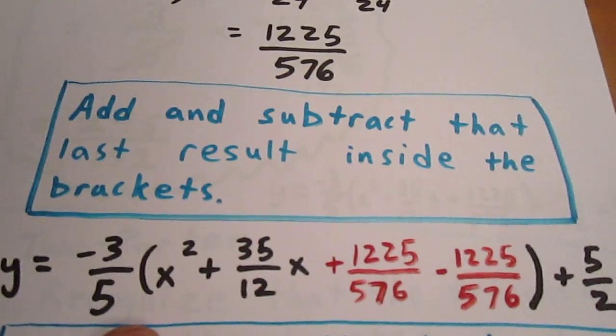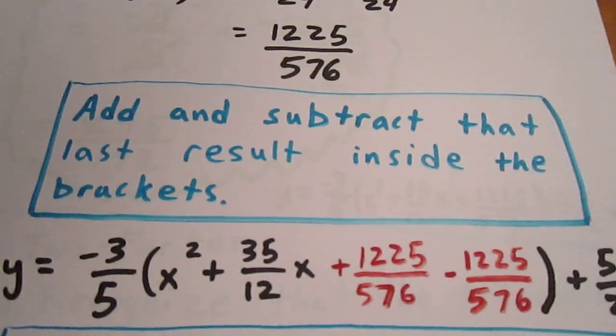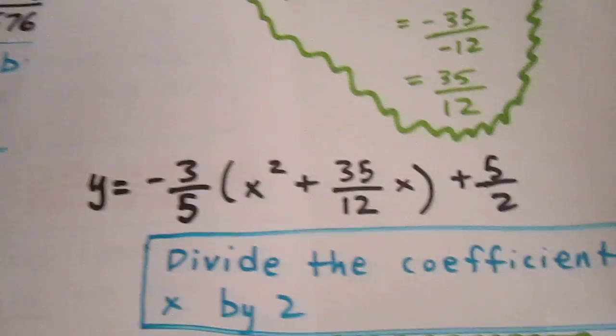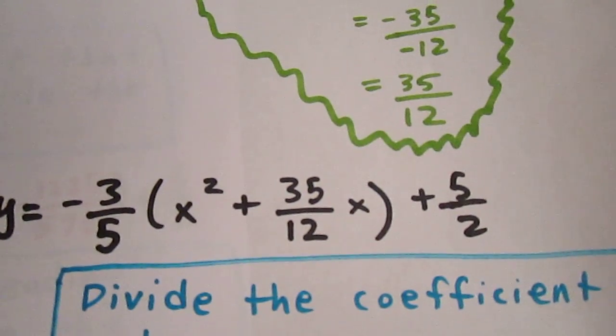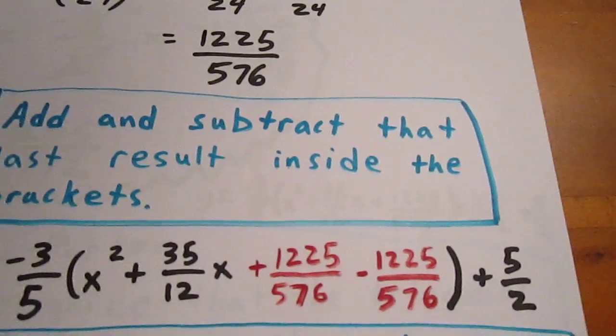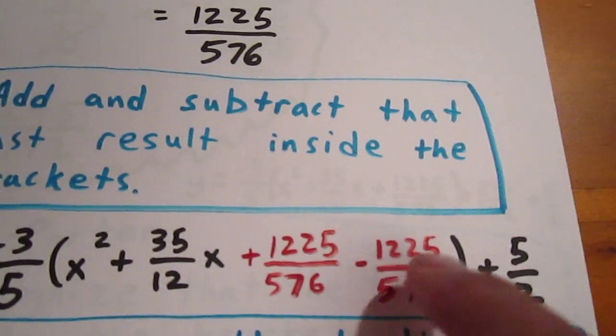We take our bracket from a while ago, which was negative 3 fifths x squared plus 35 over 12x plus 5 halves, and we add and subtract 1225 over 576.